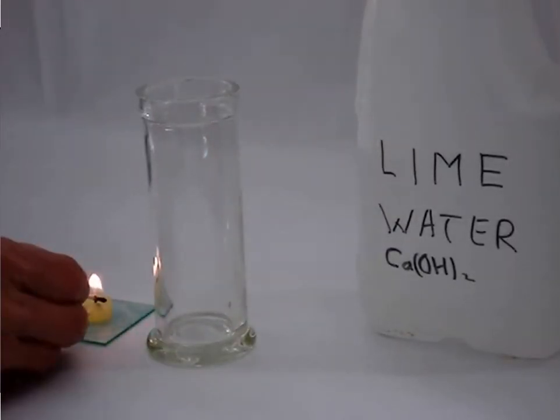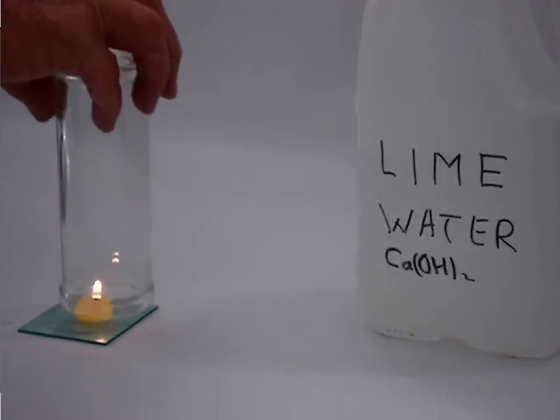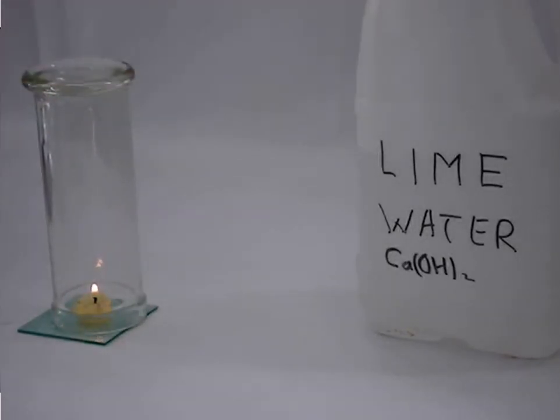Now we can show this practically. Here we have some candle wax, which is, as I've already said, an alkane. We burn it. We place a gas jar over it so that we can capture the products. After a while, we notice condensation on the surface of this gas jar. What does that tell us? It tells us that water is a product.